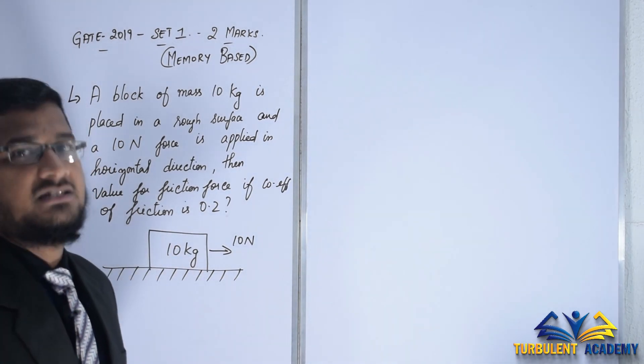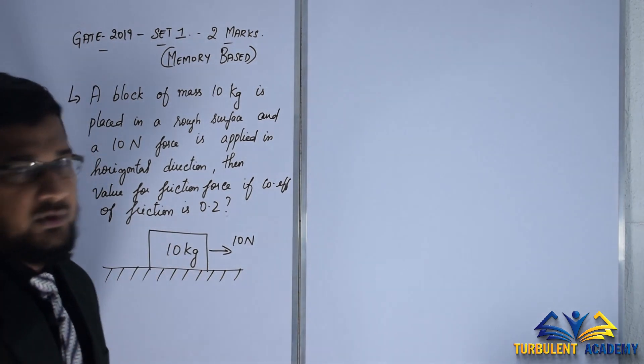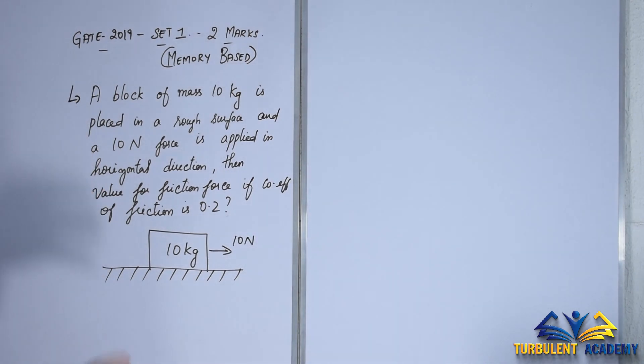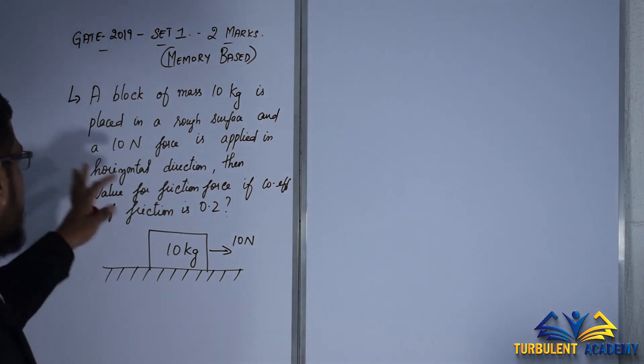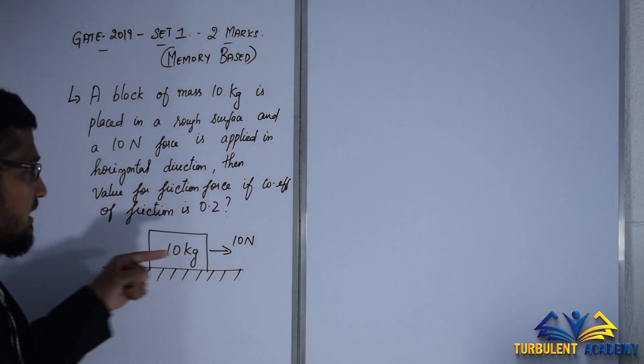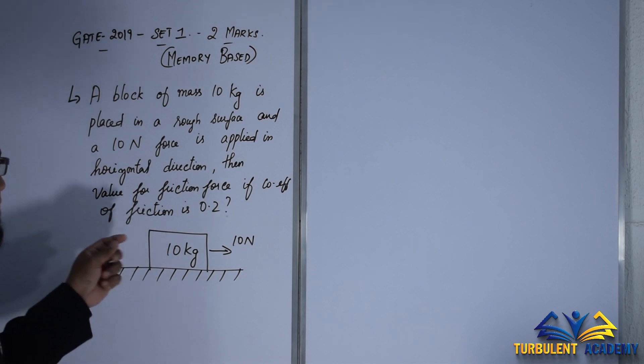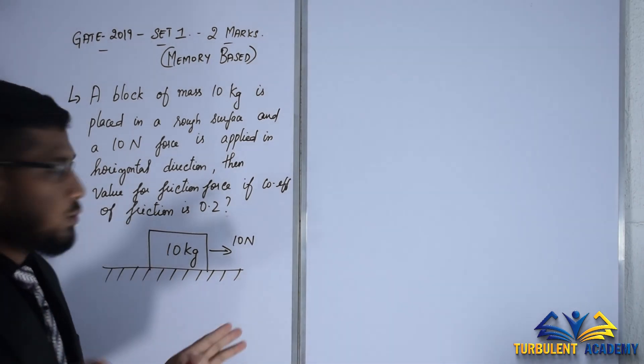First, a block of mass 10 kg is placed on a rough surface, which means it has friction, and a 10 newton force is applied in a horizontal direction. They're asking for the value of friction force if the coefficient of friction is 0.2 at that current instant.